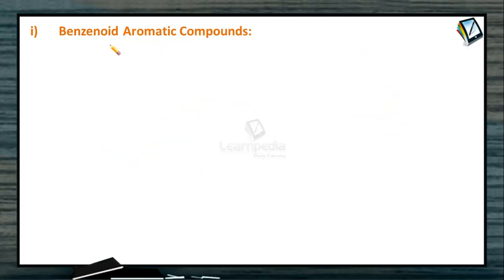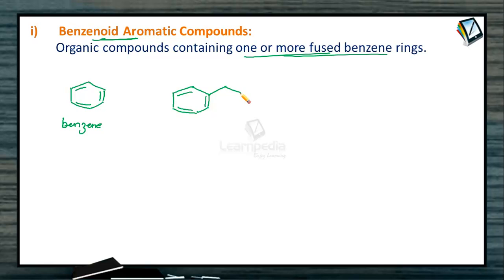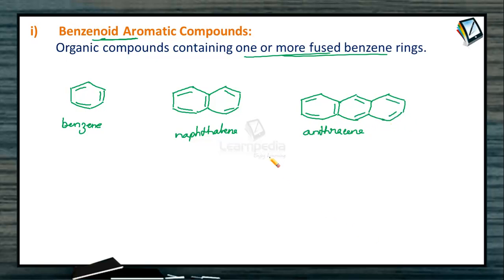Benzenoid compounds, as the name indicates, contain one or more benzene rings; when multiple rings are present, they are fused together. The best example is benzene itself. In naphthalene, two benzene rings are fused together. In anthracene, three benzene rings are fused together. These are carbocyclic compounds because the entire ring is made up of only carbon, and they are aromatic due to the alternate double and single bonds between carbon atoms.